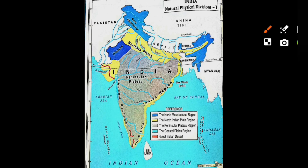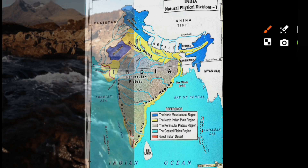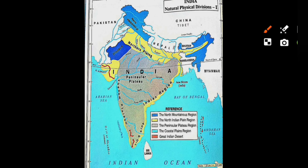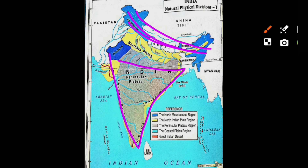The three physical regions are: the Himalayas, the Peninsular Plateau, and the Indo-Gangetic Plains — also called the Northern Plains or the Ganga-Sindhu Maidanalu.